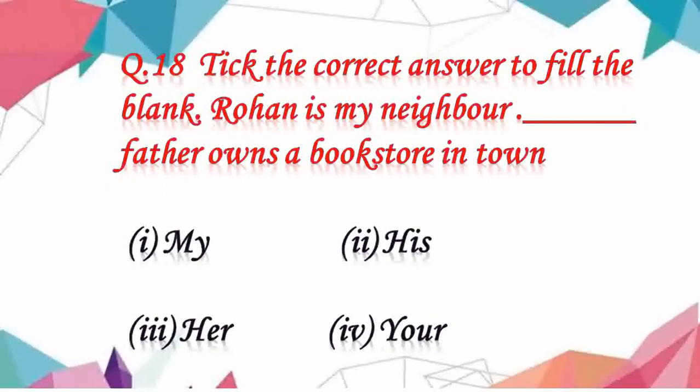Question number 18: take the correct answer to fill the blank. Rohan is my neighbor. Dash father owns a bookstore in town. The right answer is his.